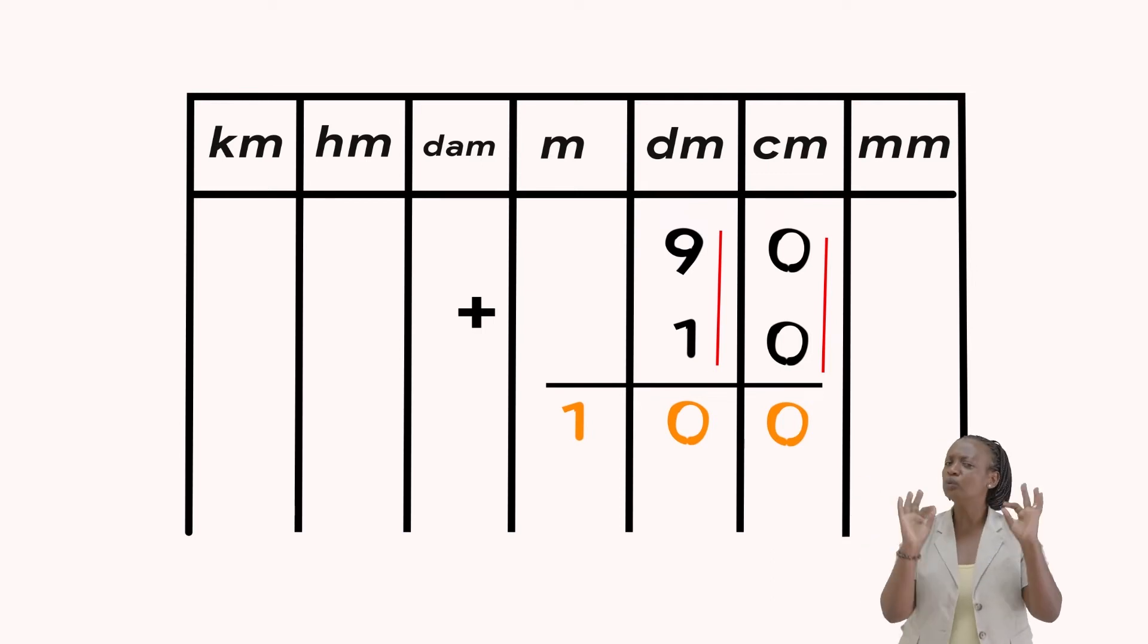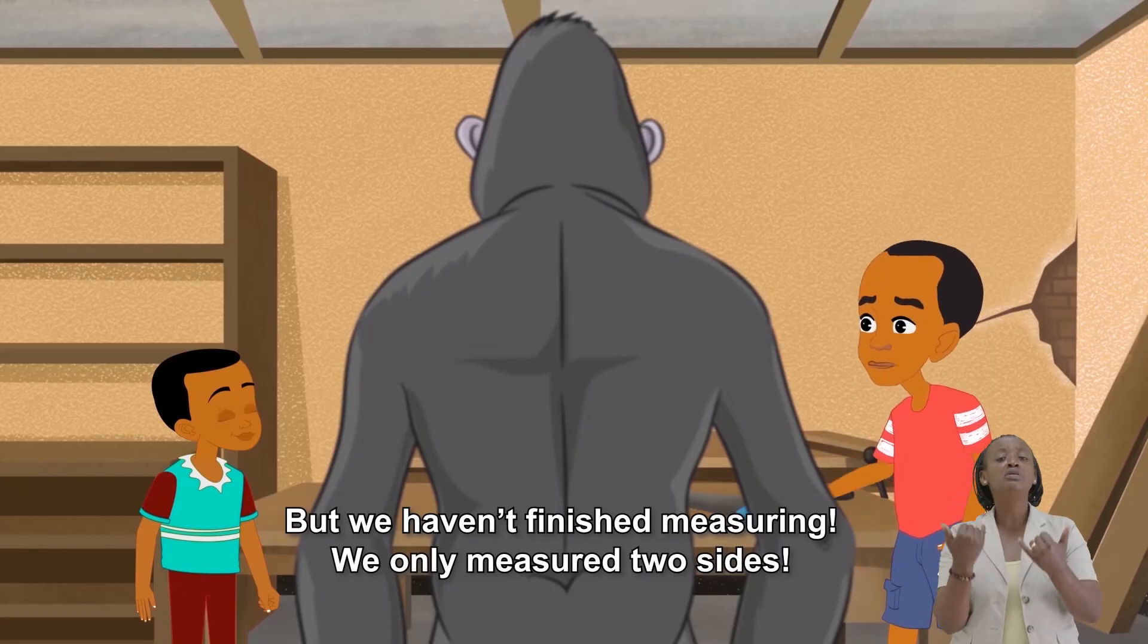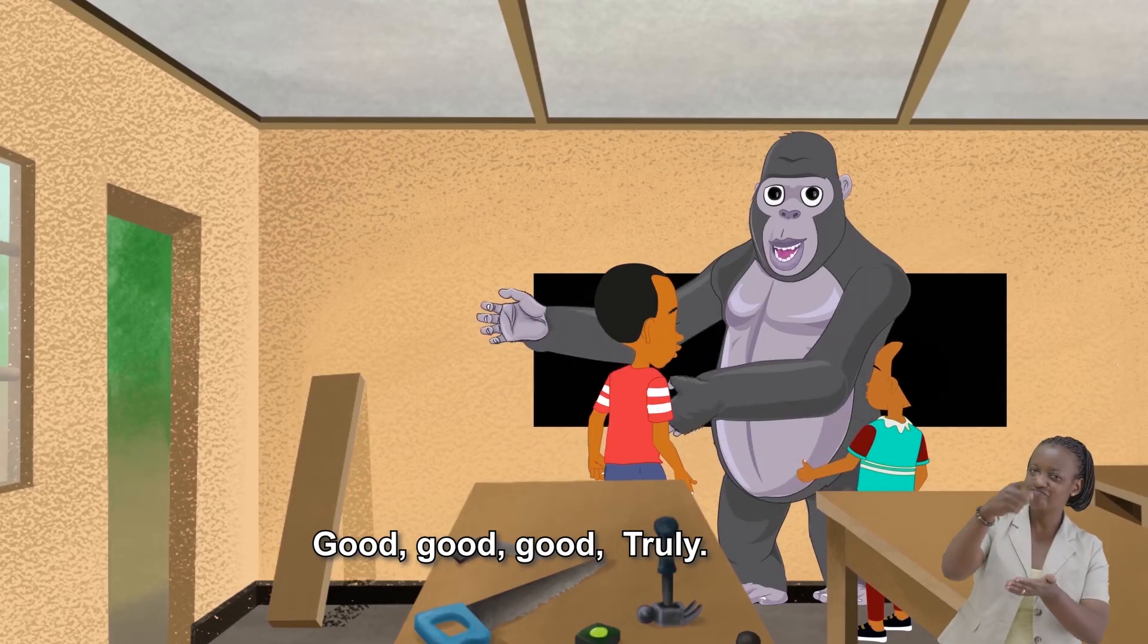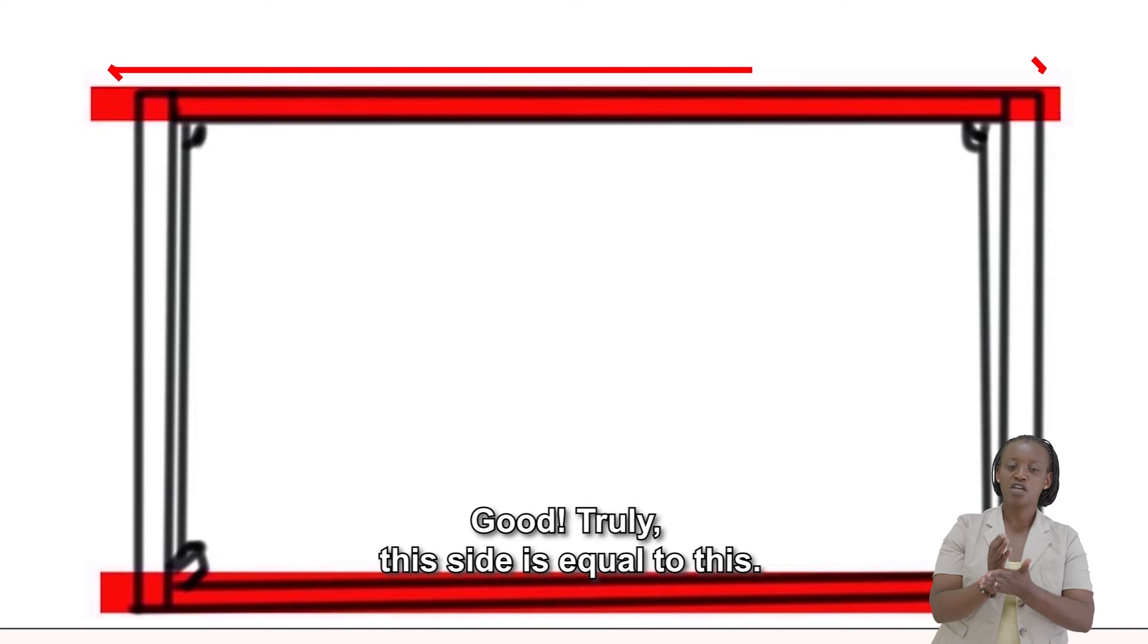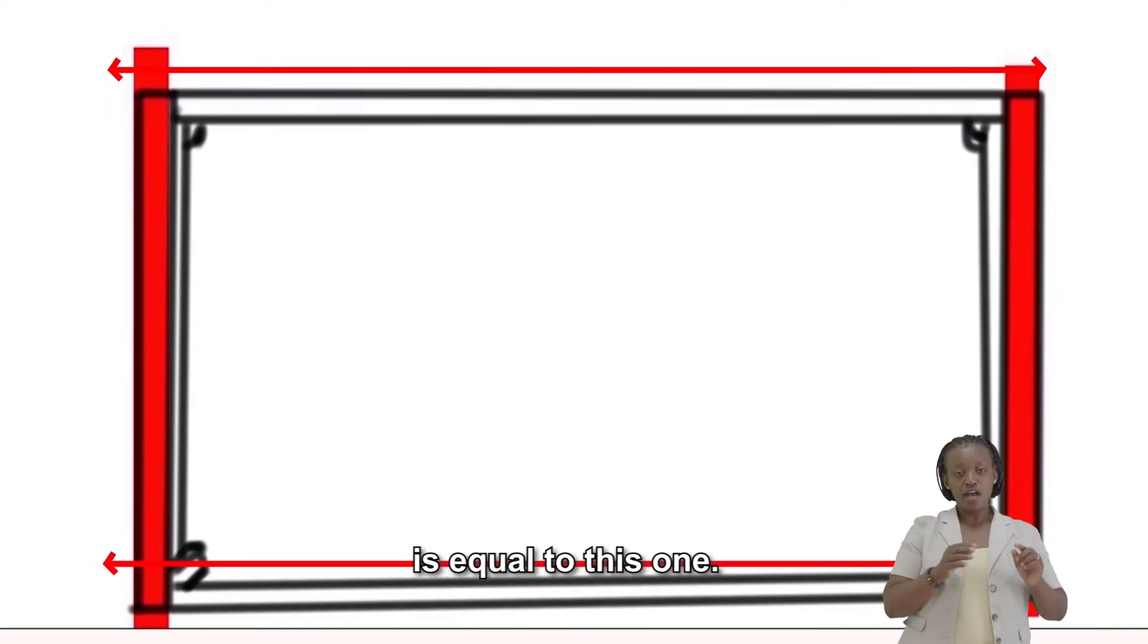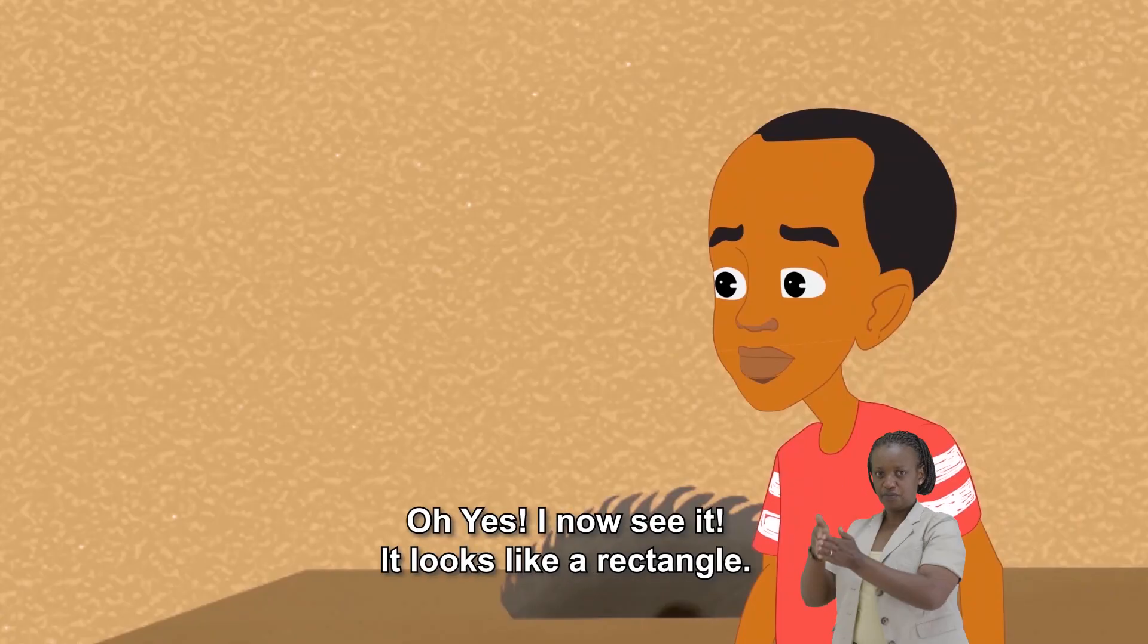That's very brilliant of you. Now, can we start fixing the bed? But we haven't finished measuring. We only measured one side. Good, good, good, actually, this side is equal to this, and this one is equal to this one.